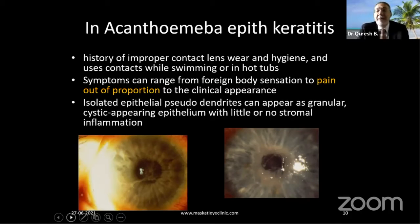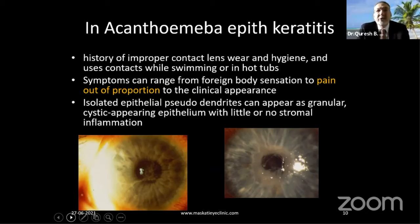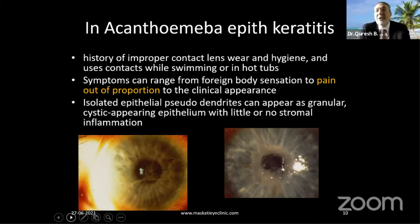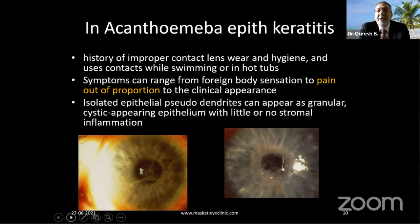With acanthamoeba, there may be a history of contact lens wear, poor hygiene, swimming, or in southern regions, farmers walking and working in muddy water such as rice plantations. The symptoms are out of proportion to the clinical appearance — in acanthamoeba the pain is extreme but the clinical appearance is minimal, opposite to fungal infection where the clinical appearance is severe but the patient doesn't complain of much pain. Acanthamoeba pseudodendrites can appear as granular, cystic-appearing epithelium with little or no stromal inflammation, almost looking like a dystrophy.